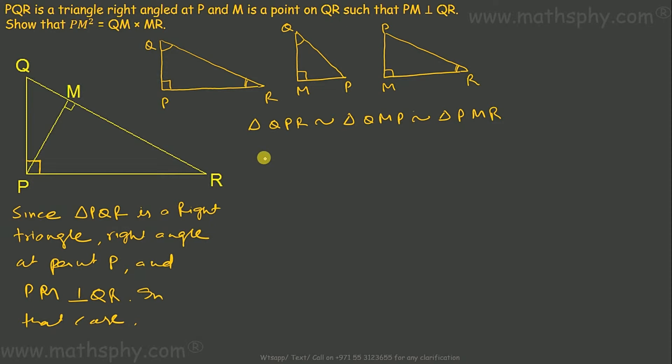Let's take triangle QMP and triangle PMR. In QMP and PMR, since both of them are similar, QM over PM will be equal to PM over RM. Corresponding sides will be equal to QP over PR.